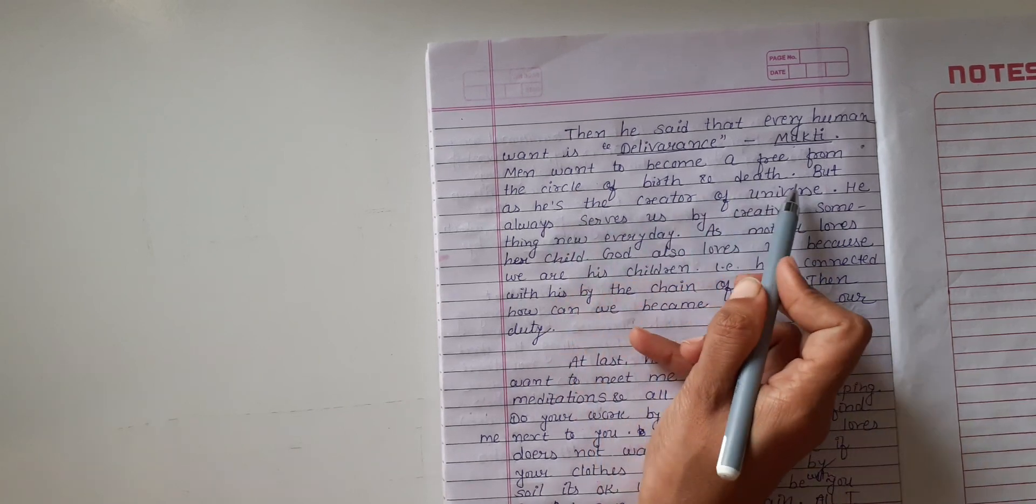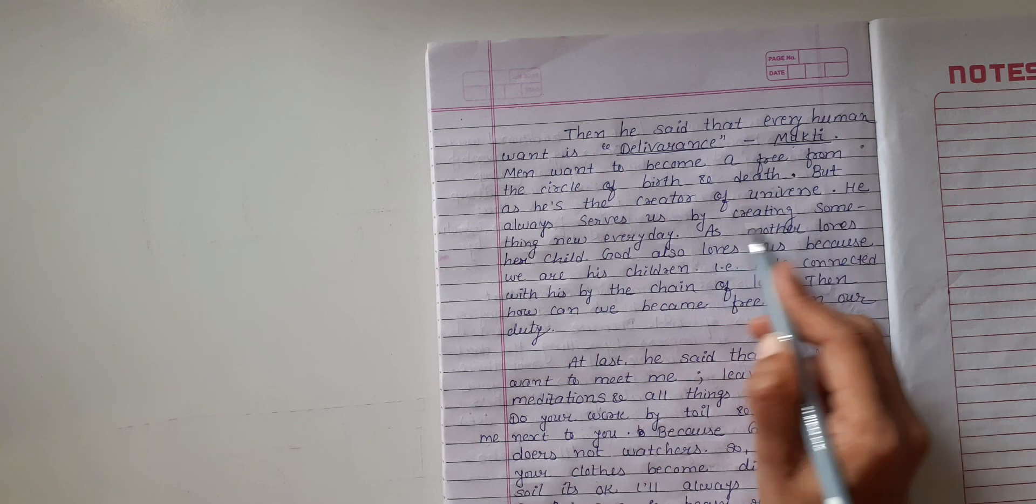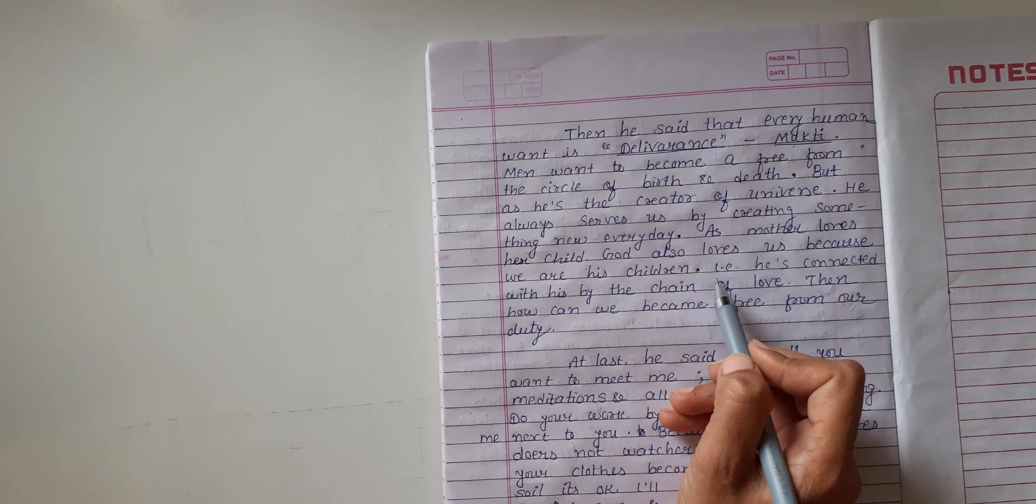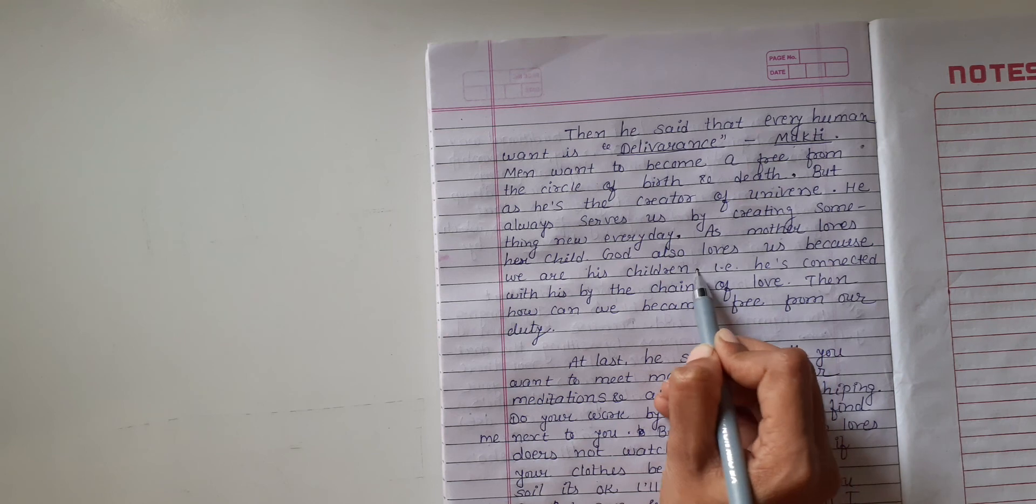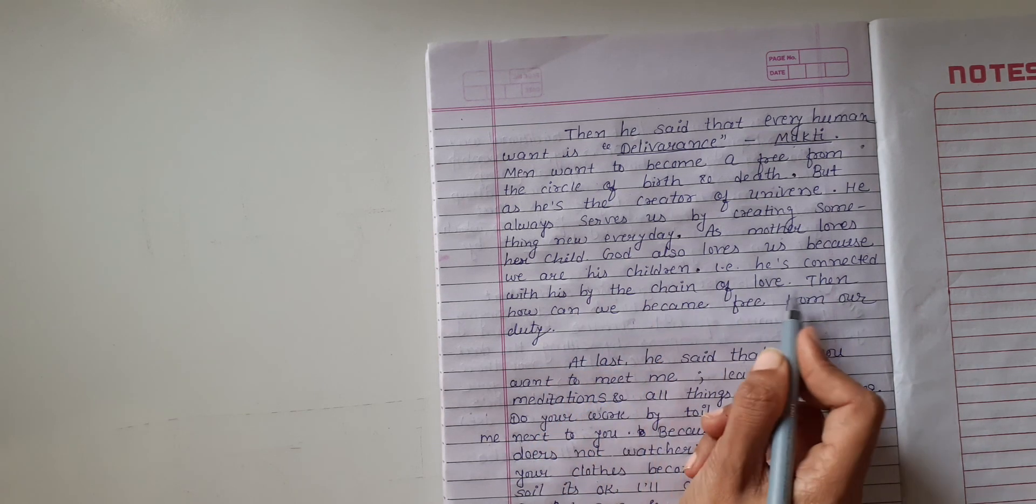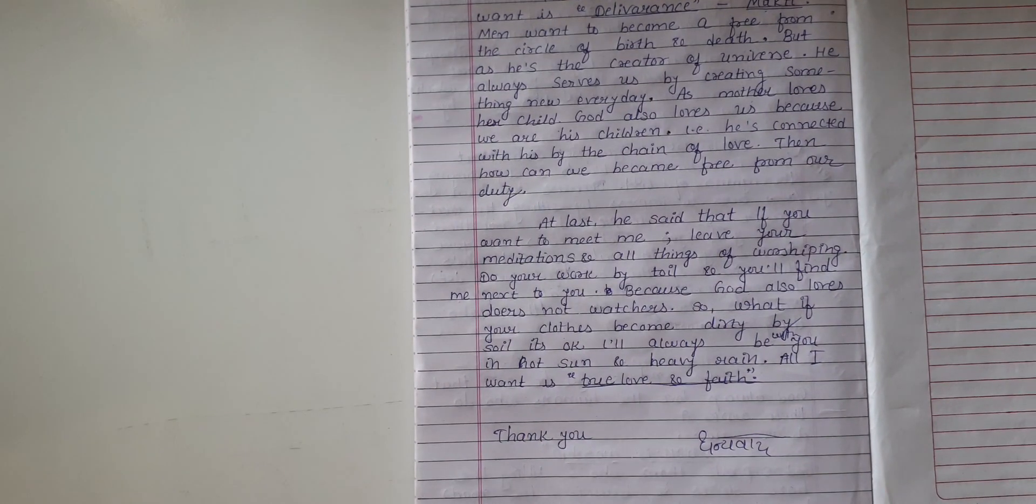Then he said that every human wants deliverance. Man wants to become free from the cycle of birth and death. But as he is the creator of the universe, he always tells us by creating something new every day. God loves us as a mother loves her child, because we are his children.